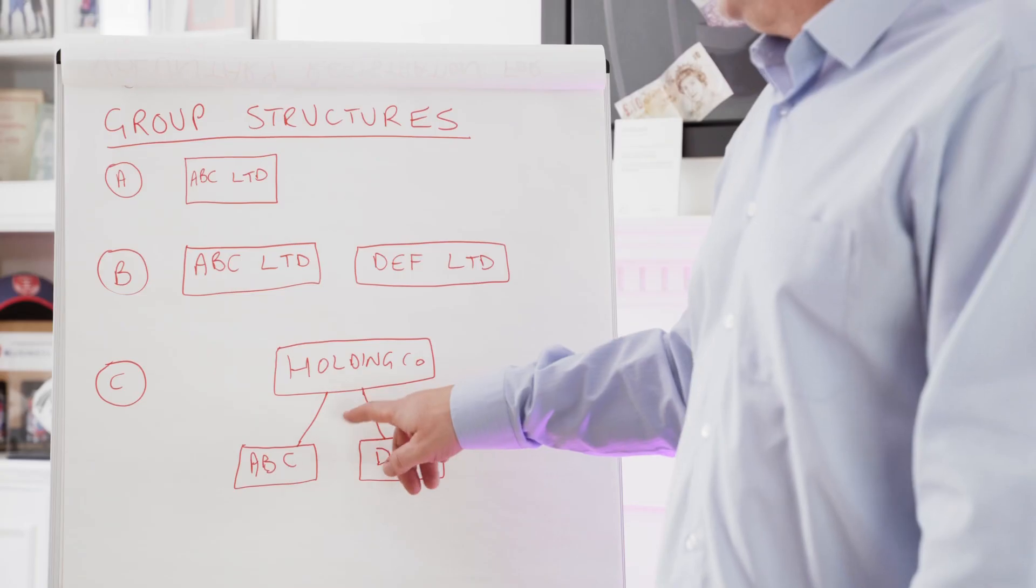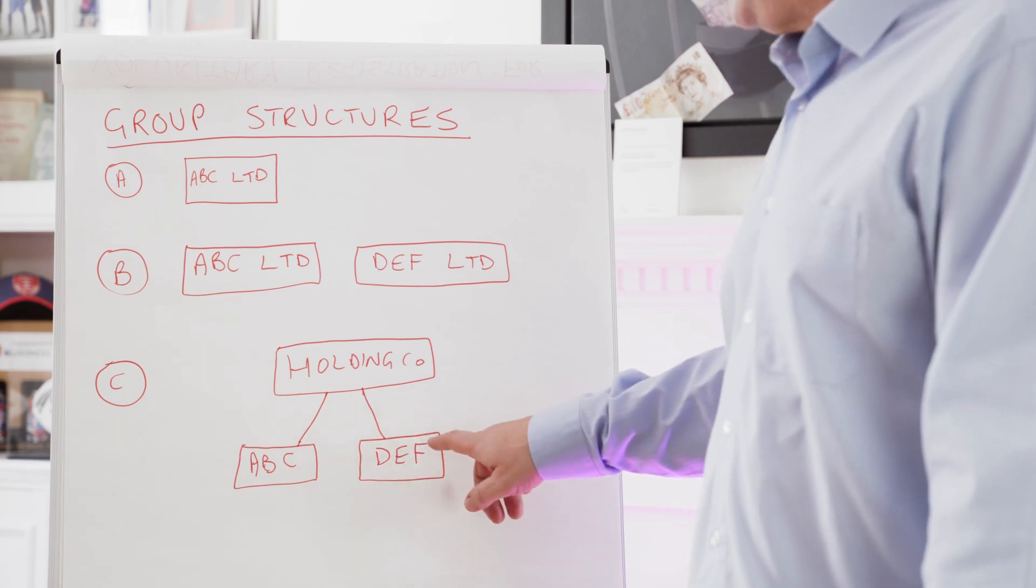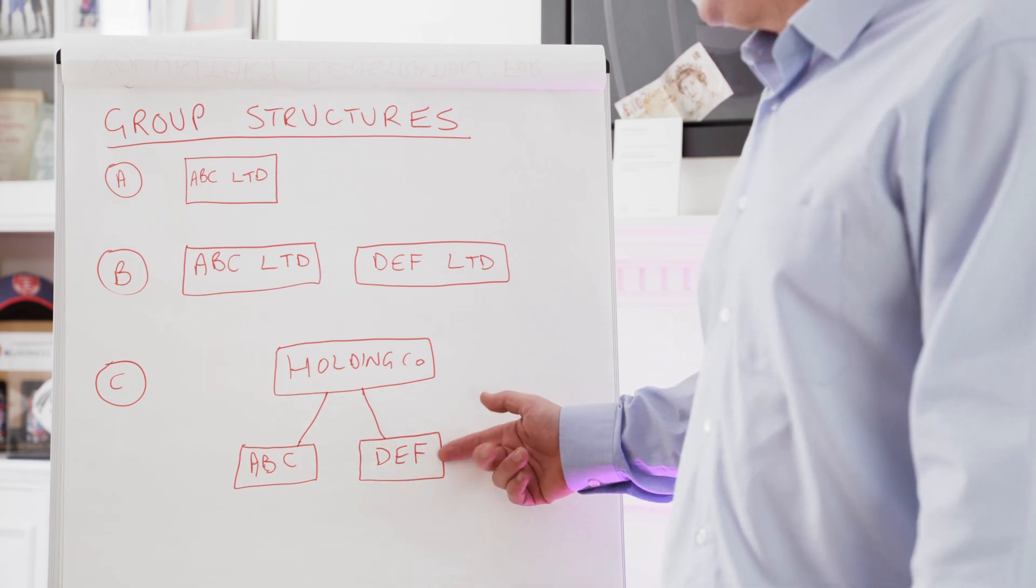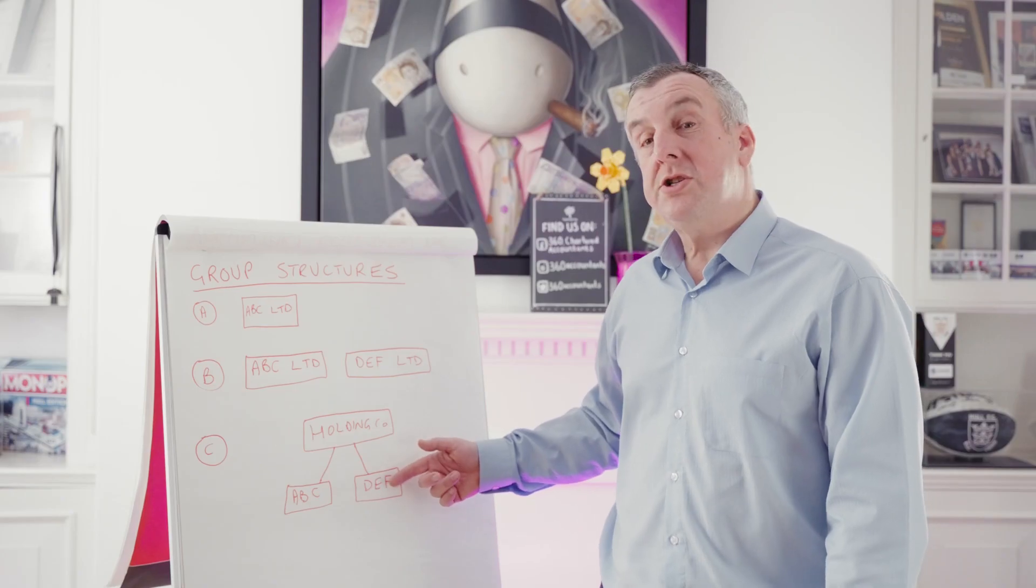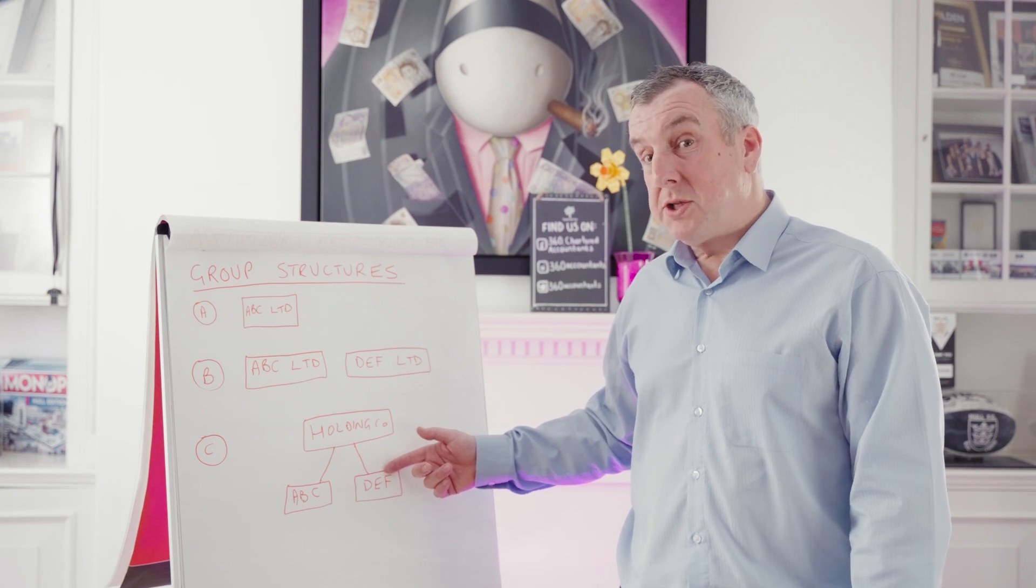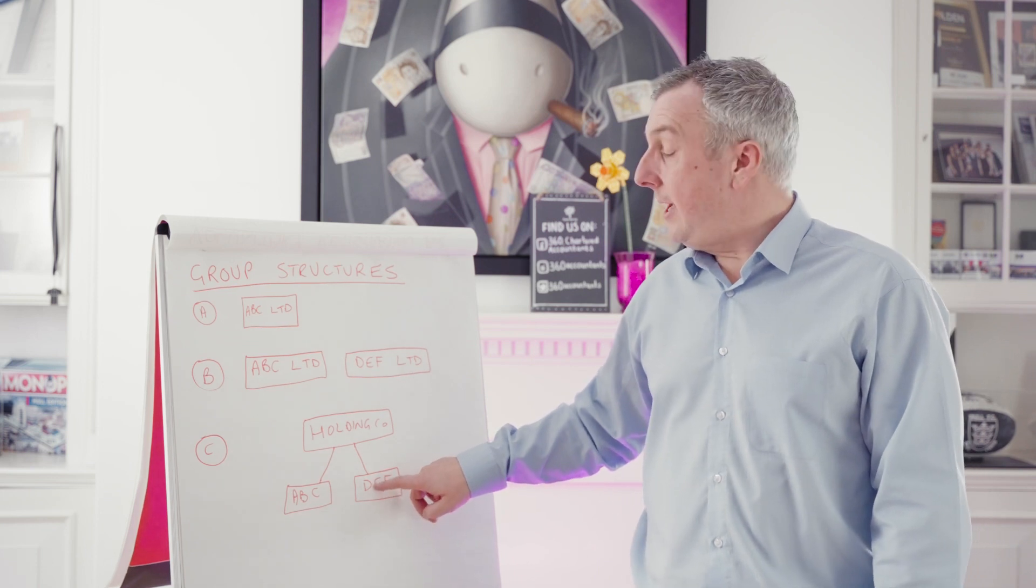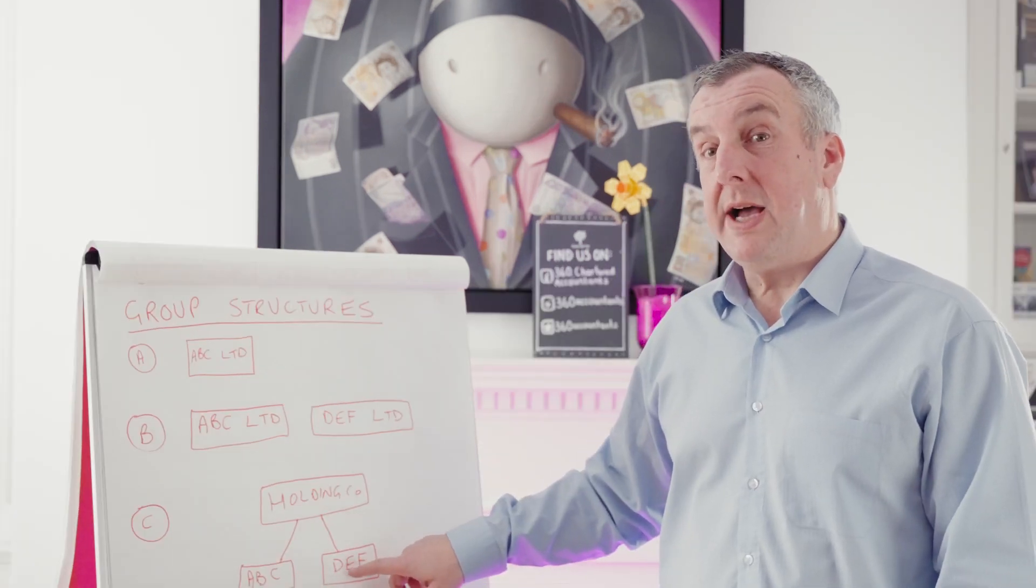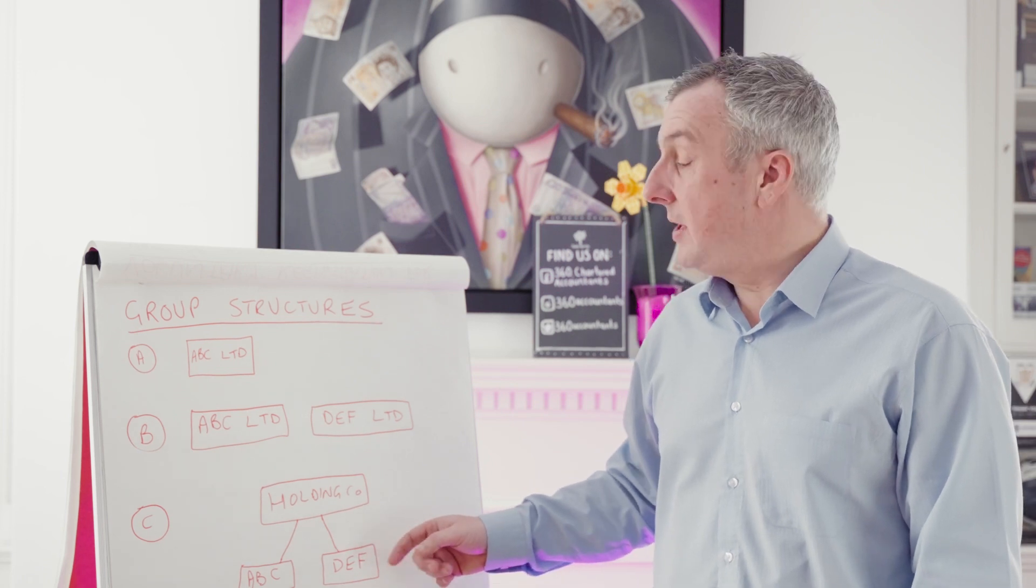One final point on the holding company structure is that if at some point further down the line, you decide you want to sell one of the companies, there's actually something called substantial shareholdings exemption, which means it may be possible for the holding company to sell that company corporation tax free. There's all sorts of rules and regulations around that, so it's something that you need to discuss with your accountant before you start going down that route.